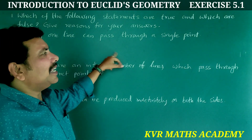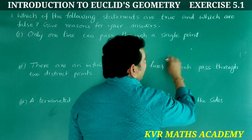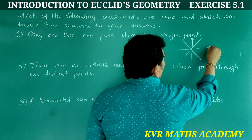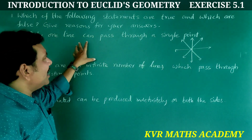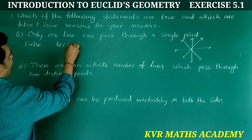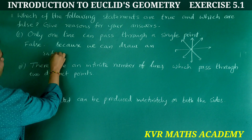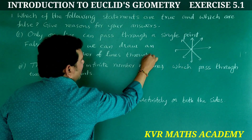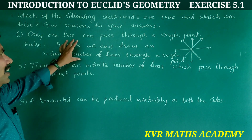Only one line can pass through a single point. How many lines can we draw from a single point? Look here — this is one line, this is another line, another line, another line. We can draw so many lines. We can draw an infinite number of lines through a single point. So the given statement is false, because we can draw an infinite number of lines through a single point.